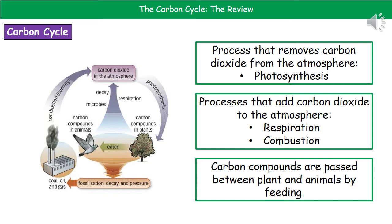To help you with that, remember that the process that removes carbon dioxide from the atmosphere is photosynthesis. That is the only one that is going to have an arrow going from carbon dioxide in the atmosphere to a tree. So as soon as you see that arrow, that is photosynthesis.